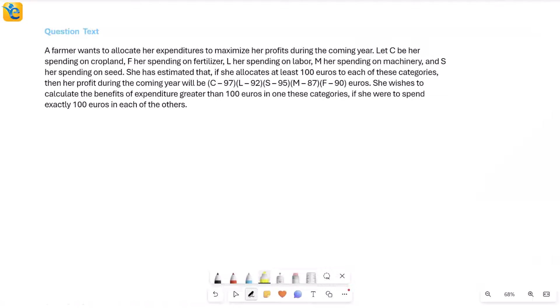All right, let's solve this question. This is about a certain farmer who wants to allocate her expenditures in a way that she maximizes her profits during the coming year. Now we have to see something about expenditures and profits. When you read further, the first thing it tells you is about the different expenditures that she has.